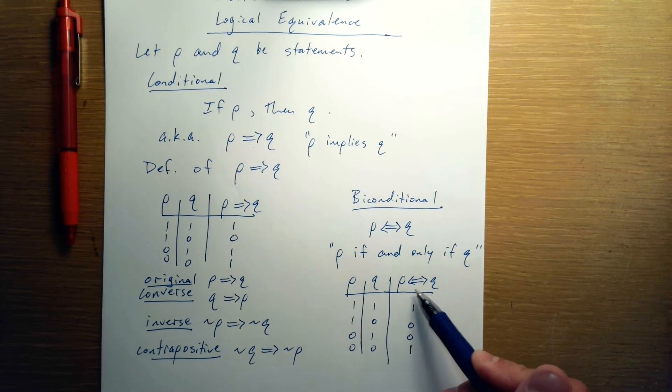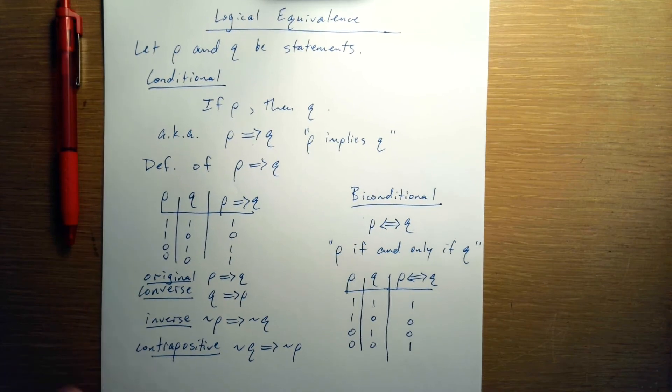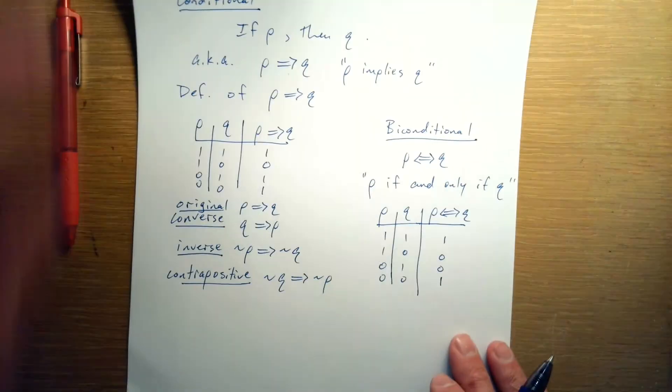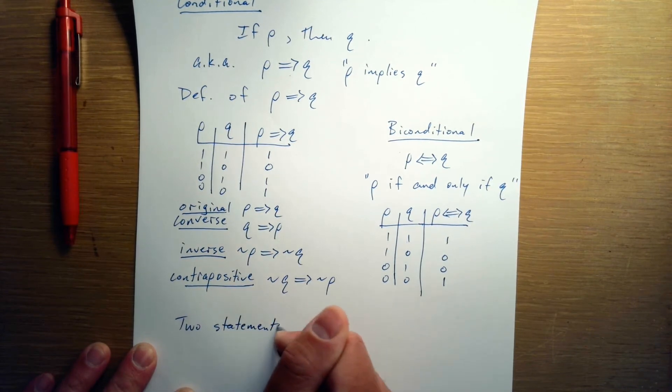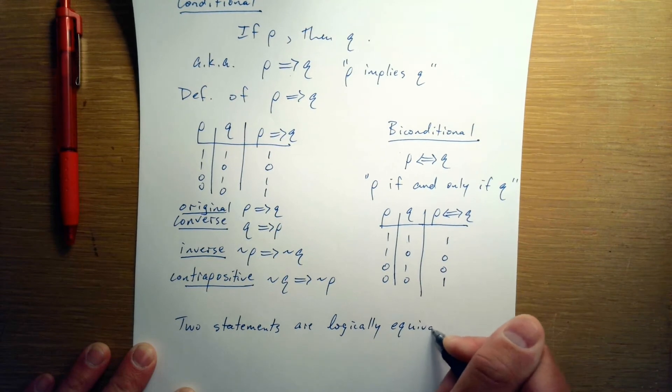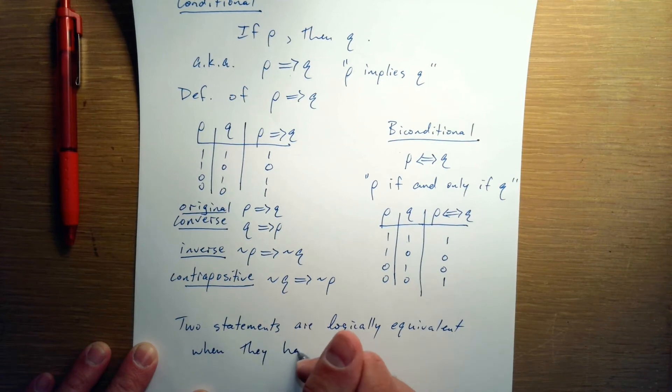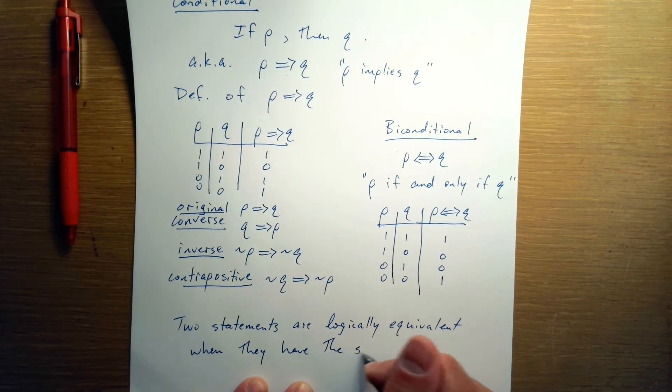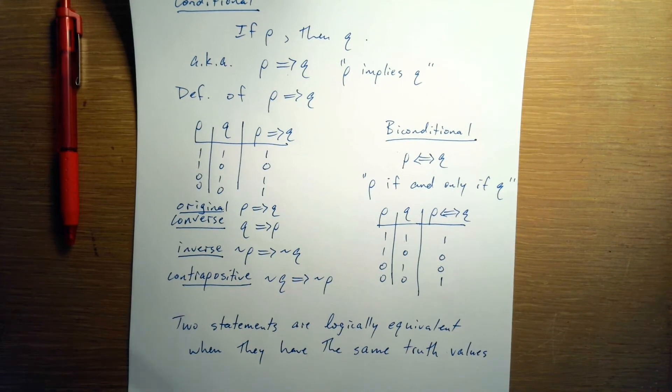And this is often what we use for logical equivalents. If they both have the same truth values, then those two statements would be called logically equivalent. Two statements are logically equivalent when they have the same truth values. And that means for any case, they have to have the same truth values.